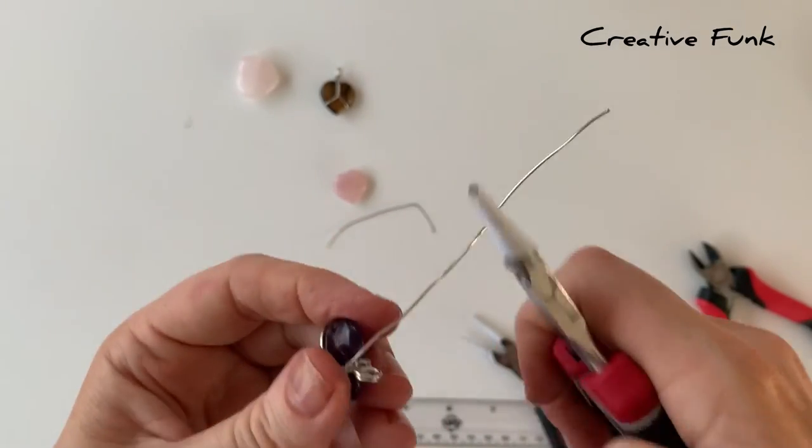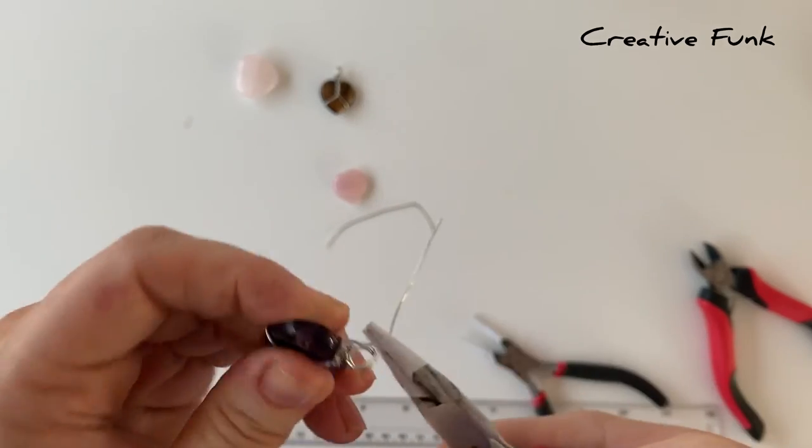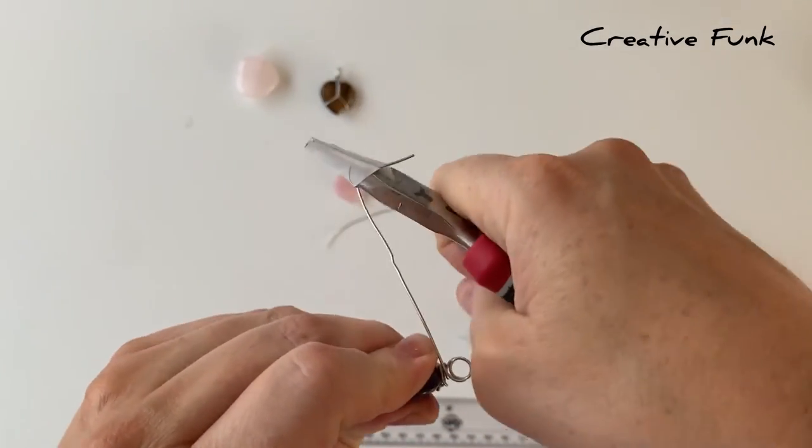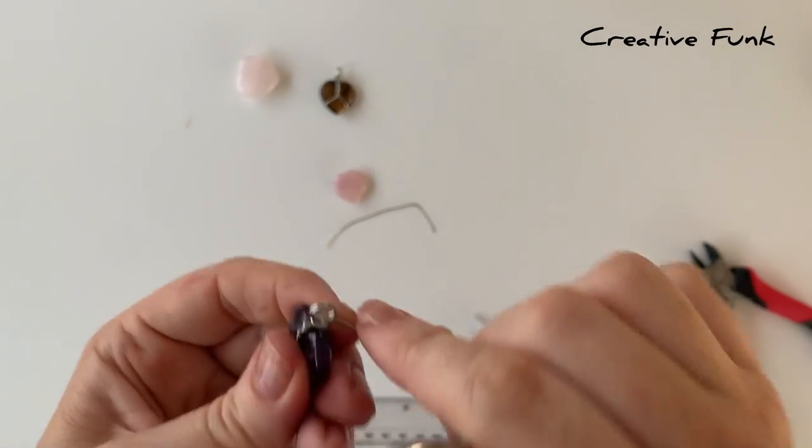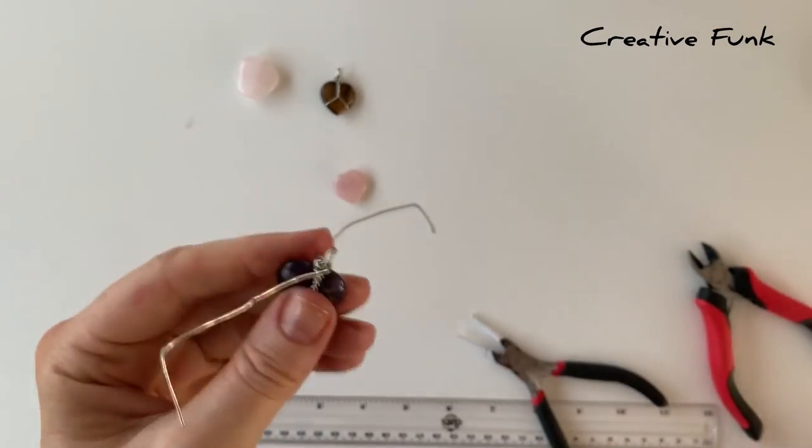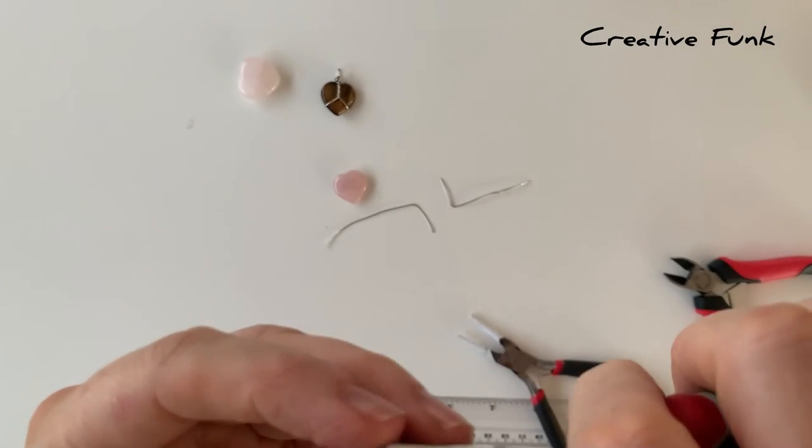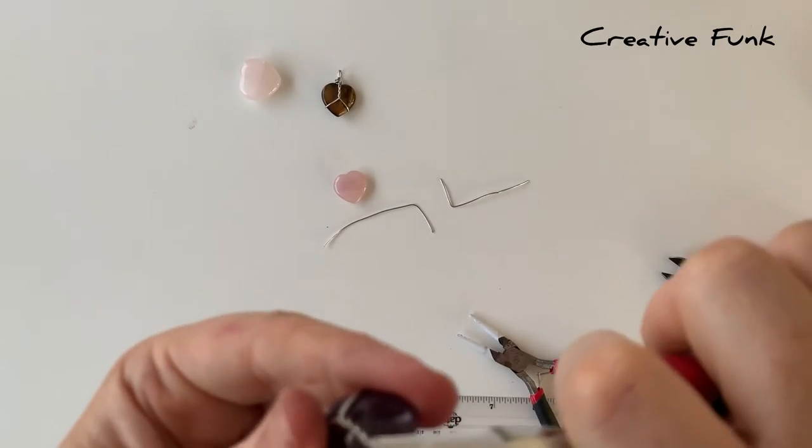Then with the other piece of wire as well, you're just going to do the same. Just wrapping it around on top of that other piece of wire and just working nice and firmly but gently, so just making sure it's nice and secure there. Then we can cut that tail off and crimp it down, making sure there's no sharp ends.